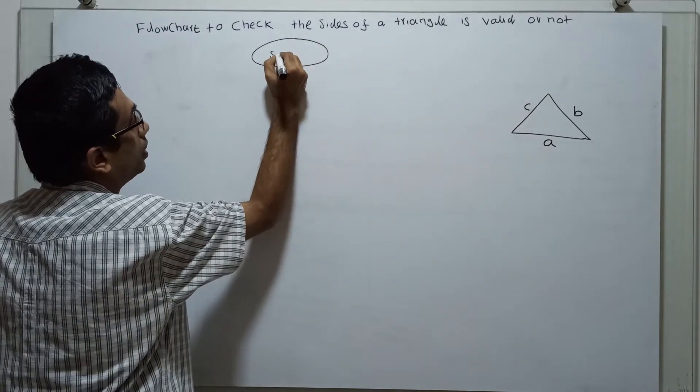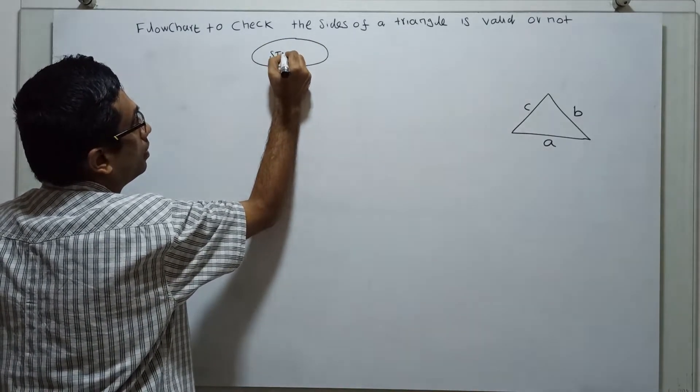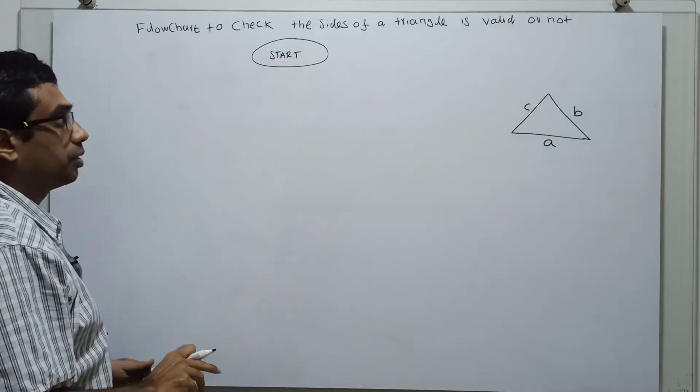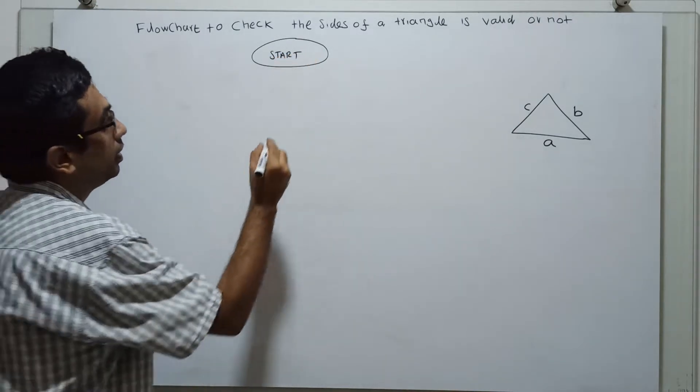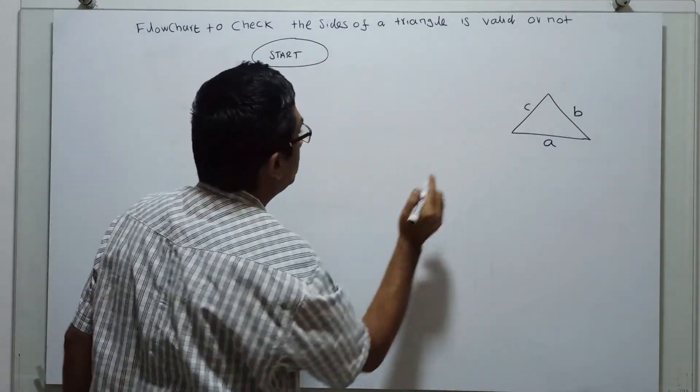Logical start of the flowchart, start. Next we have to obtain the inputs of three sides A, B, C.